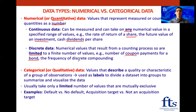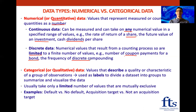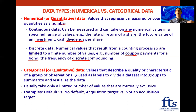Another example of discrete data is the frequency of discrete compounding. With discrete compounding, we have a certain number of compounding periods per year, like we covered in the time value of money. We could do monthly compounding — 12 compounding periods per year — or semi-annual compounding, which is two compounding periods per year, or quarterly compounding, which is four compounding periods per year.